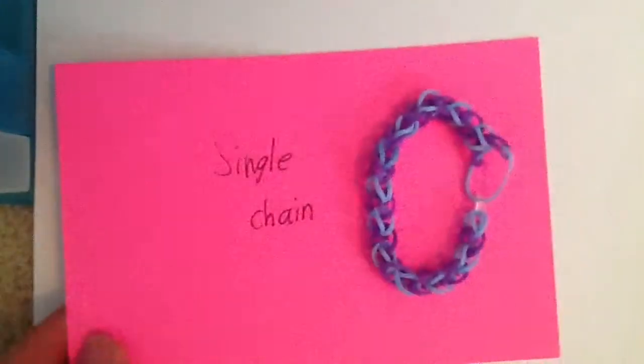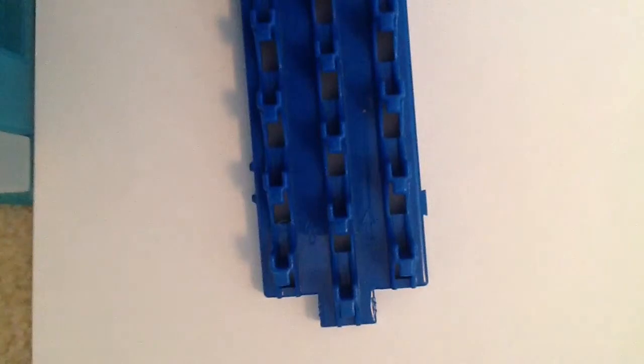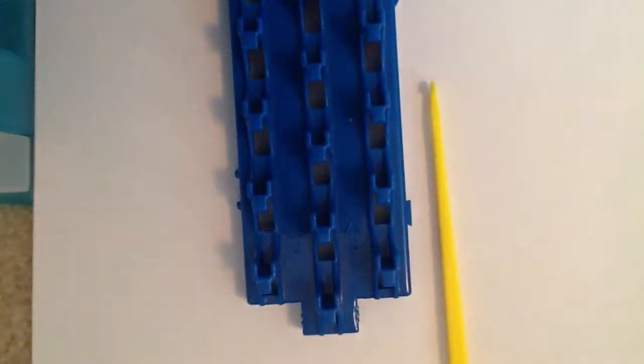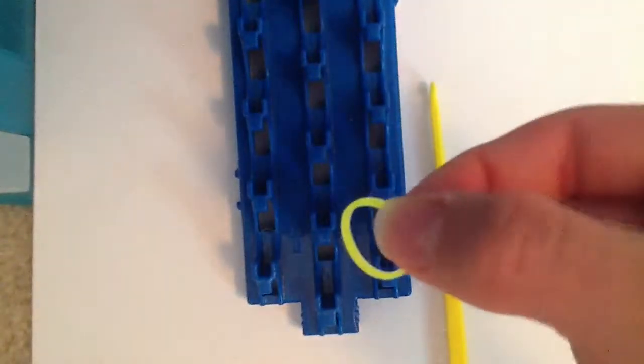So let's get started. Today you'll need your Crazy Loom, and today I'll be using the Crazy Loom hook, this crazy little hook. And you'll need Aurora Bands. Today I will be using this neon yellow color and I will be using this pink. So I hope you enjoy.